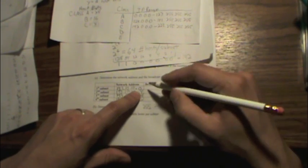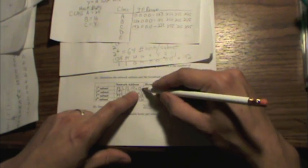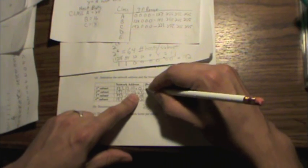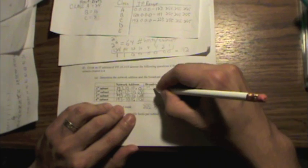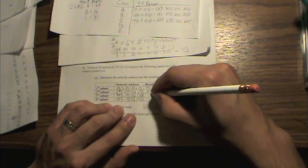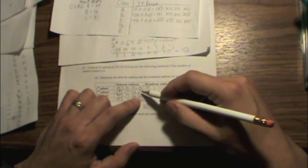So the broadcast address of a 0 subnet is going to be 193.10.10.63, 193.10.10. For the 64 subnet, we're looking at 127.